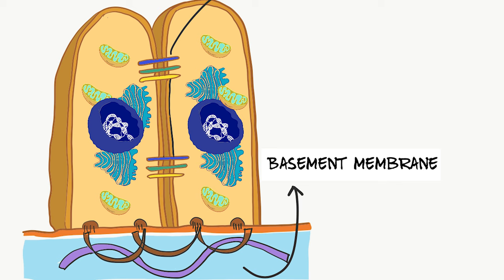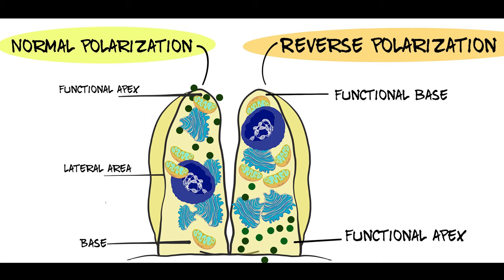All the poles of an epithelial cell are established by certain molecular mechanisms, and these poles create a barrier between adjacent cells so that the cells can function as programmed. During the process of reverse polarization, these poles get reversed.